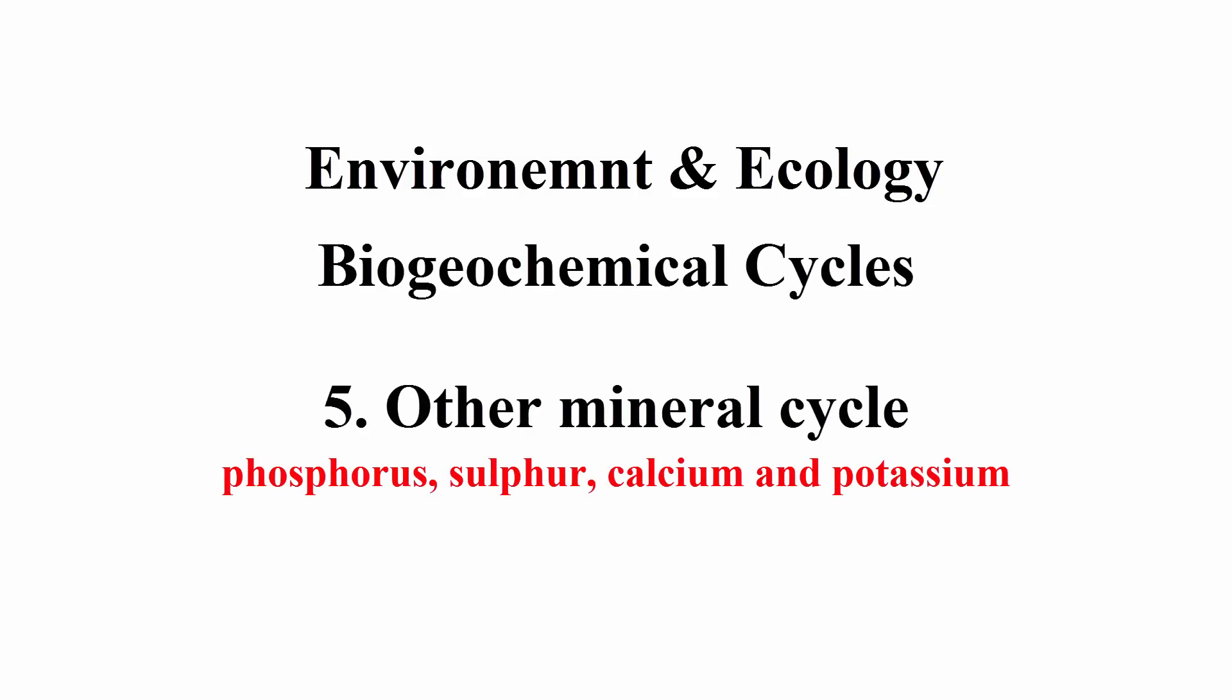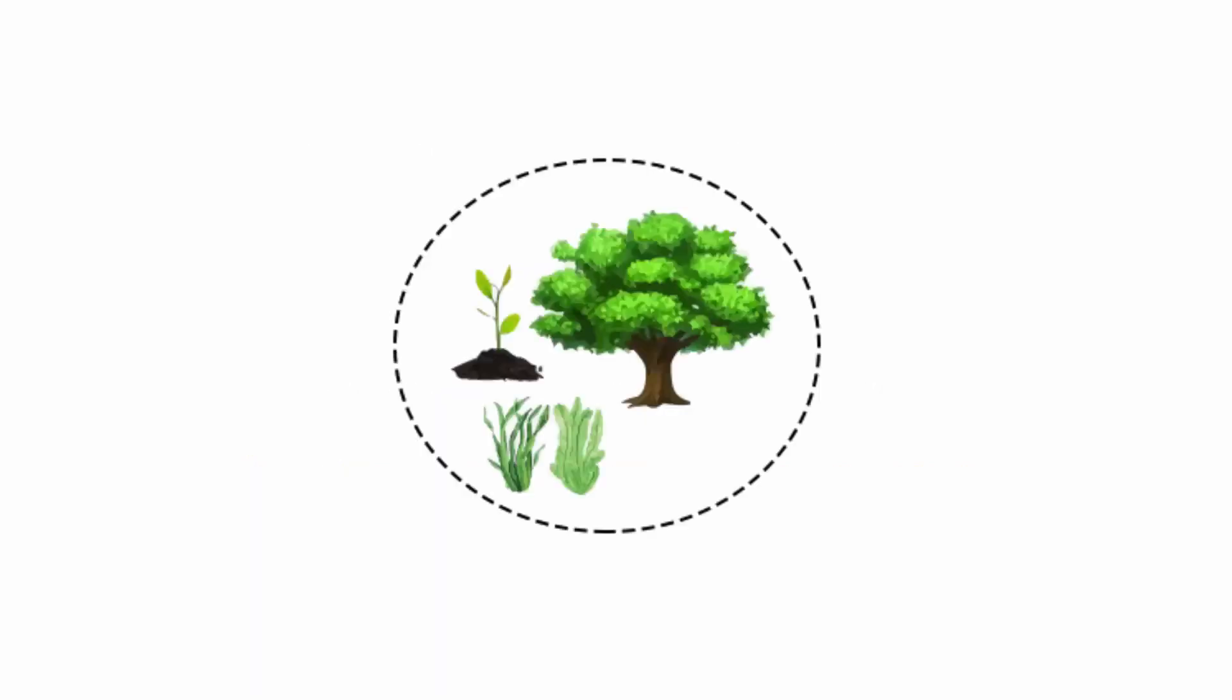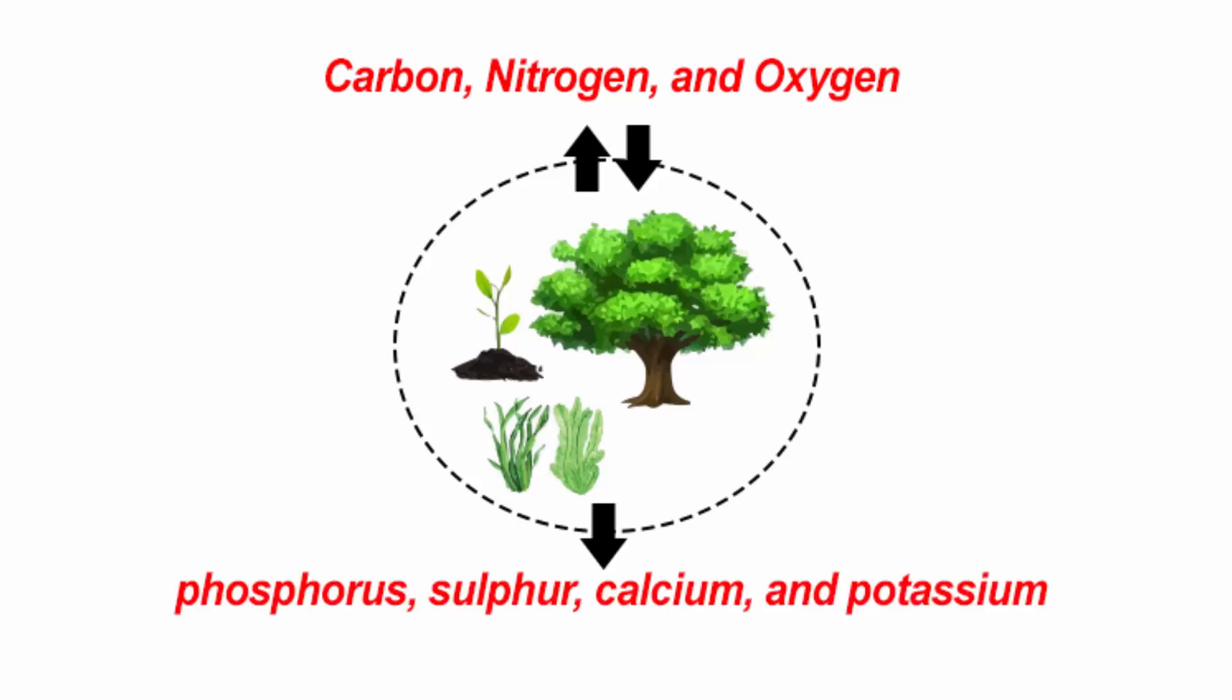And the fifth one is other mineral cycle. Apart from carbon, nitrogen and oxygen, there are many other minerals that are essential for plant and animal life. Here we have the names of those minerals: Phosphorus, Sulfur, Calcium and Potassium.